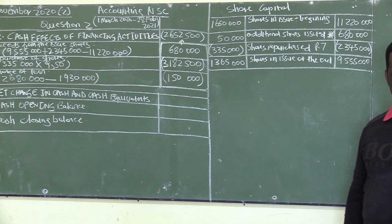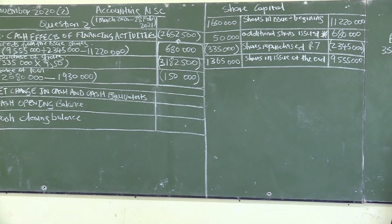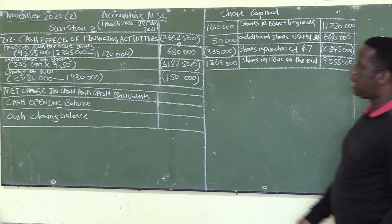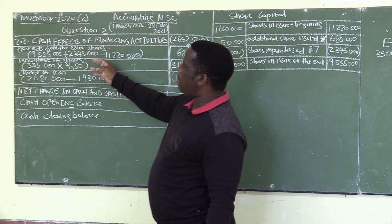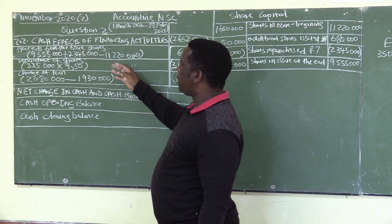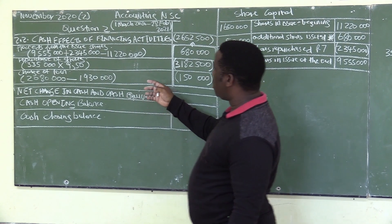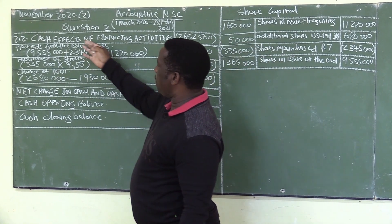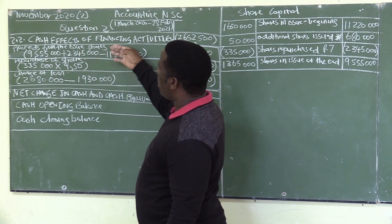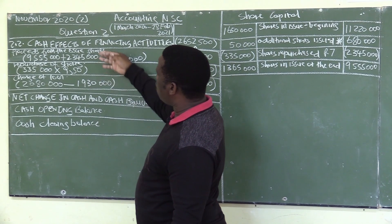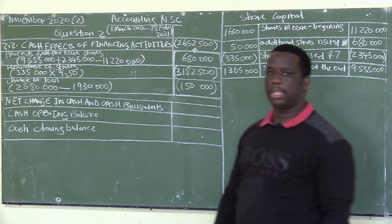When you are doing the financing activities, these details will not always be given. From the issue of shares, sometimes these details are not given — you will just be given the cash effects of financing activities and you will be required to fill in the details and show the calculation.